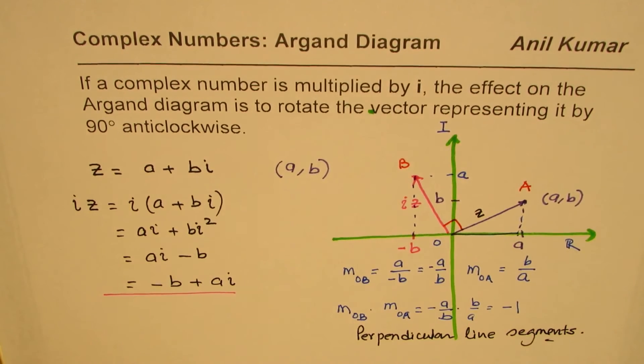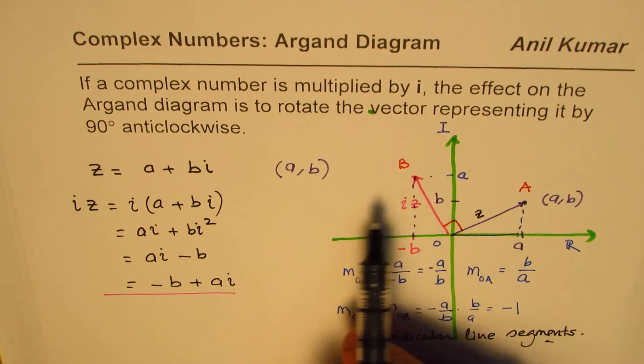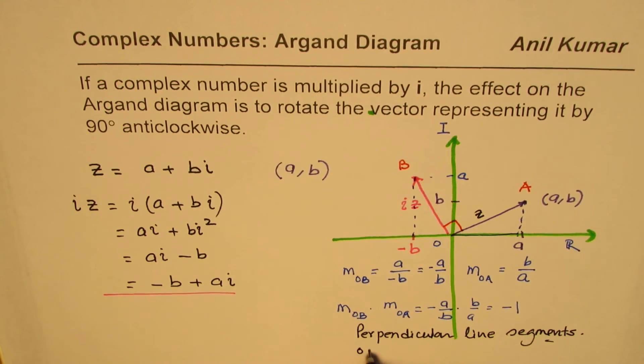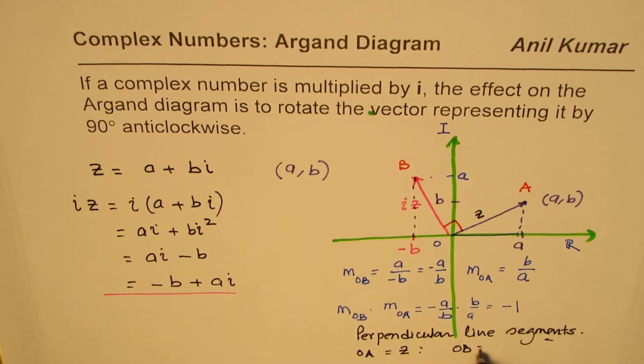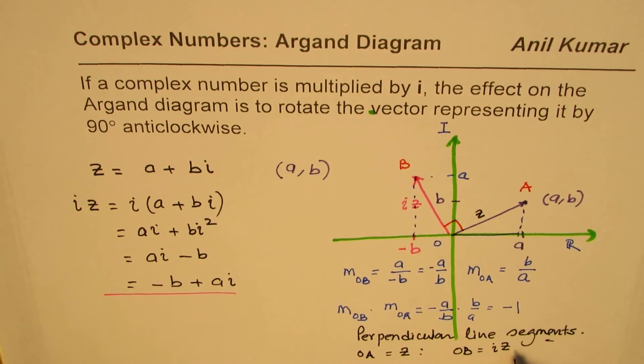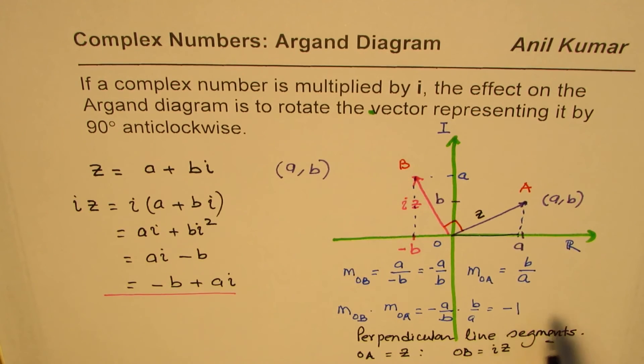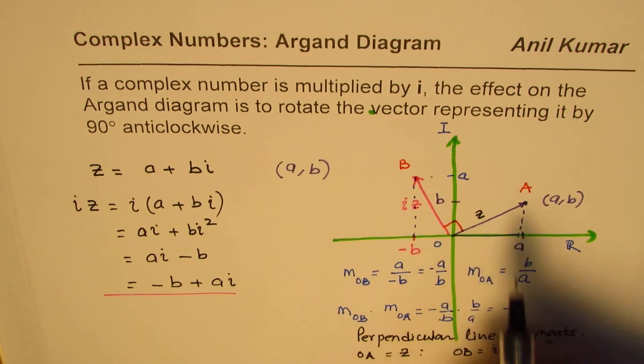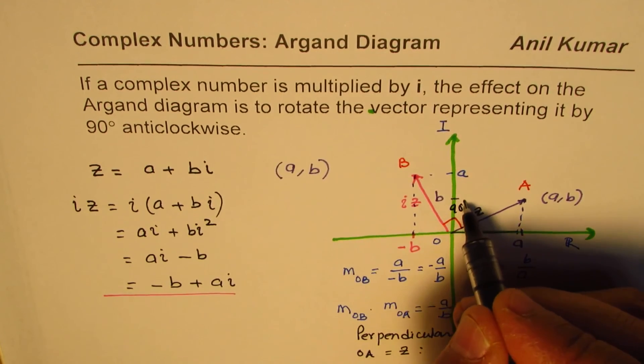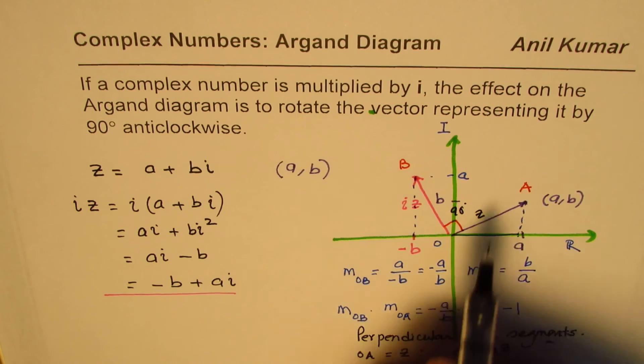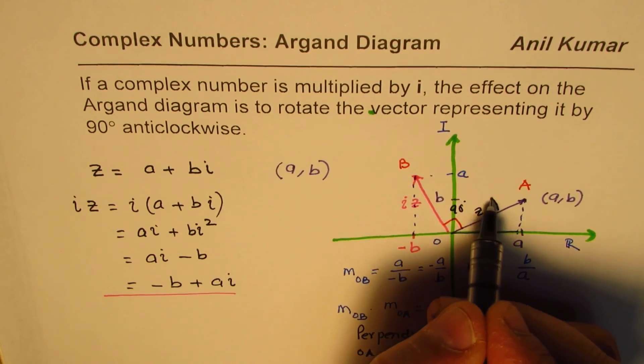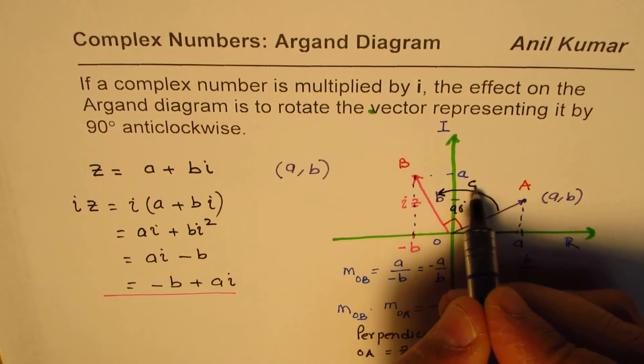Now, these line segments are representing our complex number, right? So, OA is actually representing z, the complex number, and OB represents iz. So, what you notice here is that the angle between these two complex numbers is 90 degrees, correct? So, that ensures this is 90 degrees, and from the rotation, you can see very clearly that it is counterclockwise.